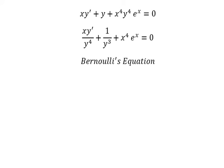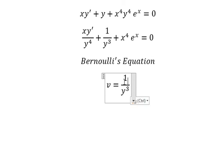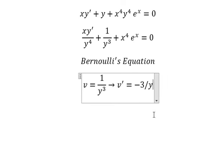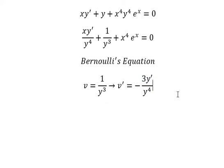So I will put V equals to this one. Then we differentiate both sides. Because we don't have negative number 3 in here, so I will put negative number 3 to the left.